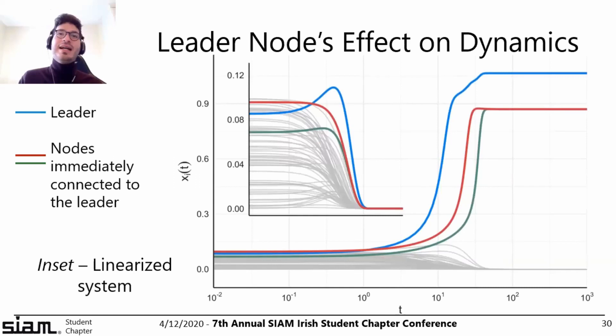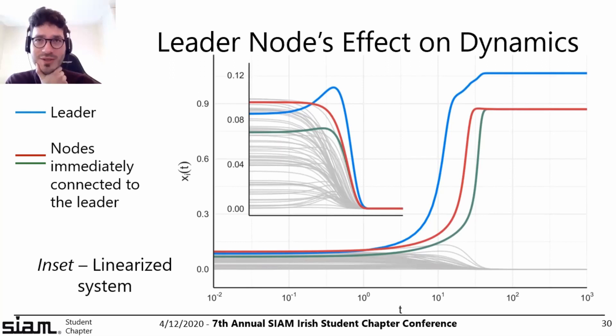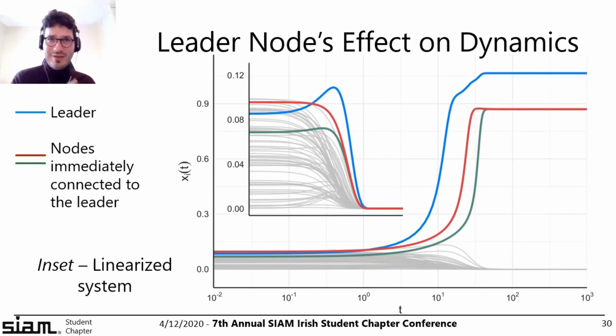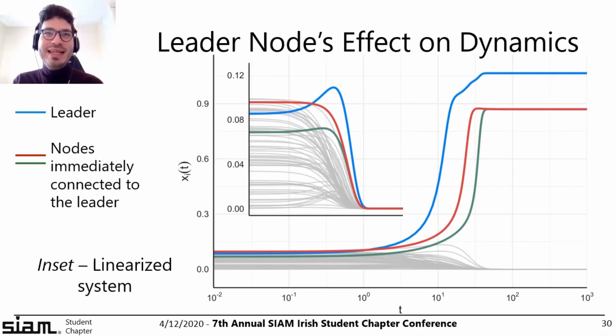Looking at the time evolution to steady state, each node's resource trajectory shows the leader rising to the top, with the two neighboring nodes also ending up with resources above zero. A linearized version of the system confirms that the two nodes immediately adjacent to the leader have the largest transient growth aside from the leader itself.